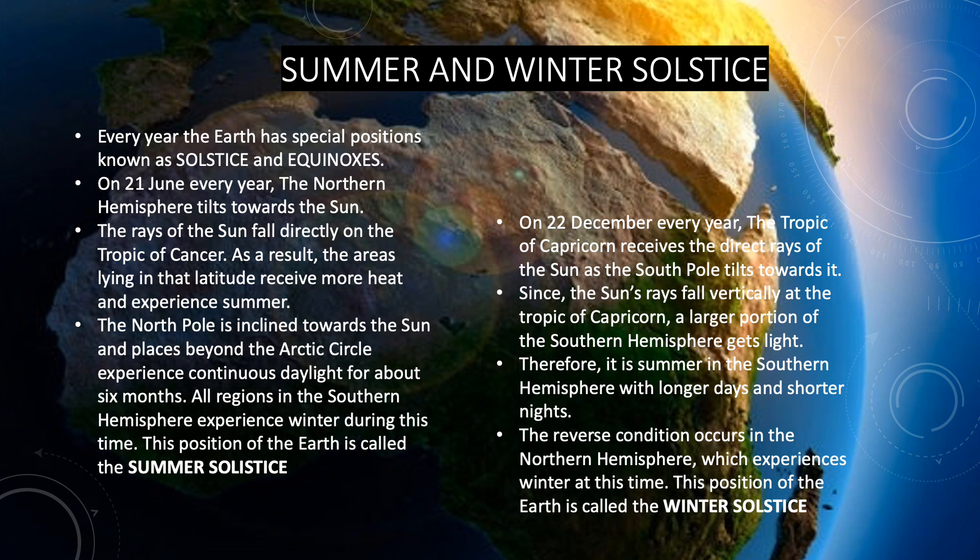The North Pole is inclined towards the sun, and places beyond the Arctic Circle experience continuous daylight for about six months. This particular position is called Summer Solstice.